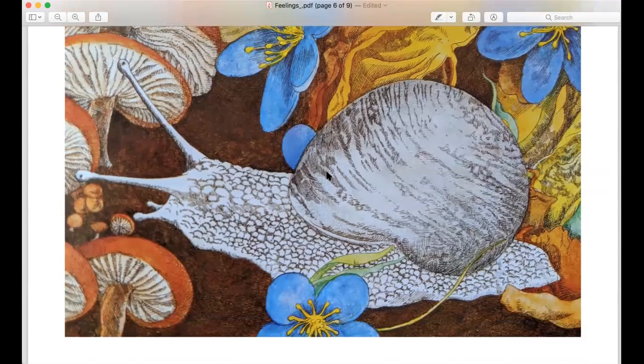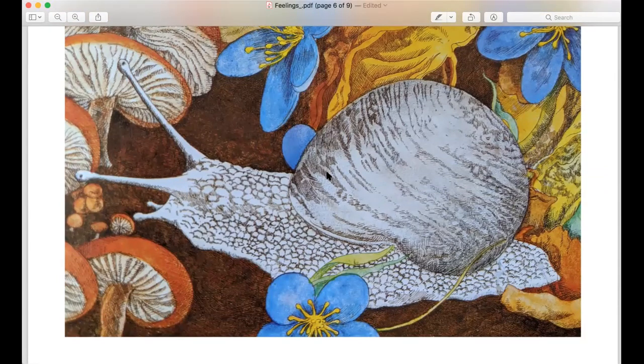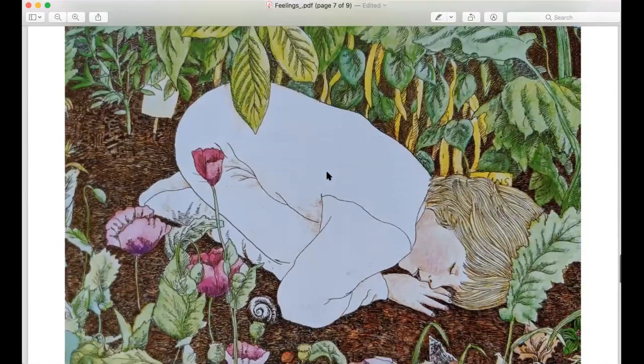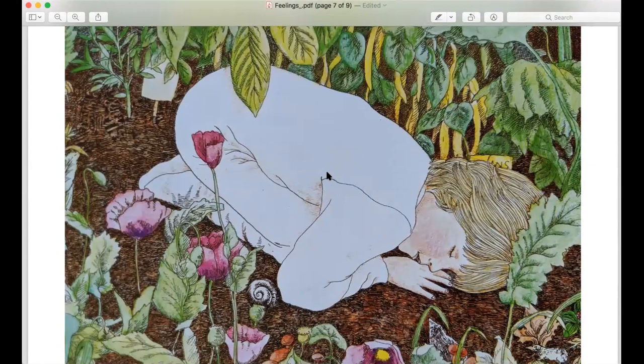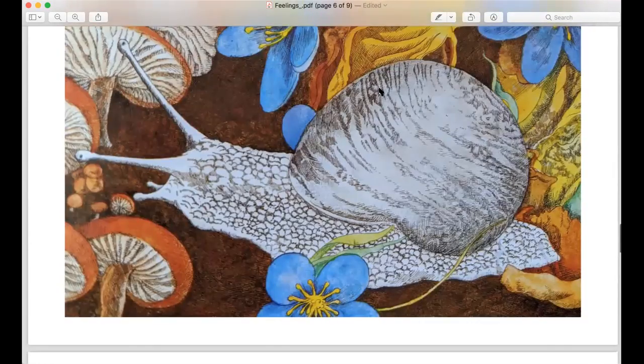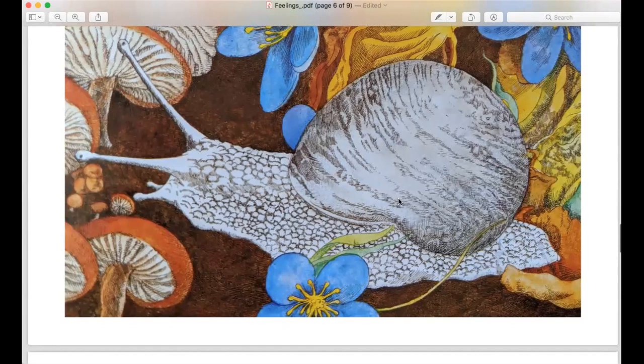So our book that we read this week was The Snail's Spell. And remember the child that was in the garden was crumpled up in this position that is called Child's Pose and they were dreaming about getting smaller and smaller, so small they could fit inside the snail's shell.